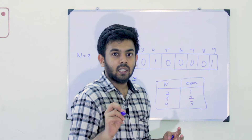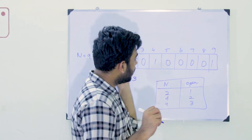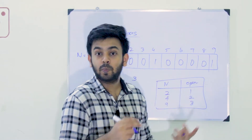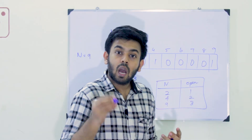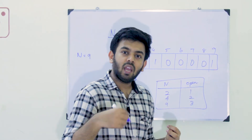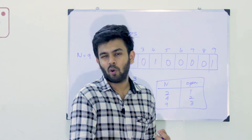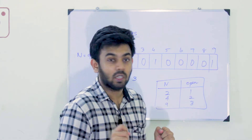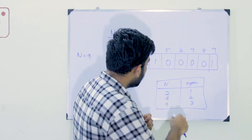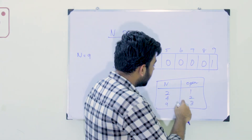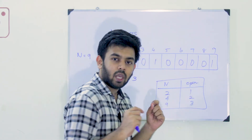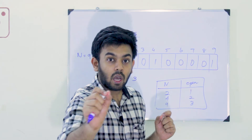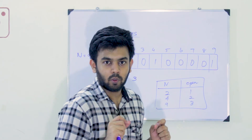You can do brute force here, but you can implement it in order of one. In any perfect square, those doors will be open.